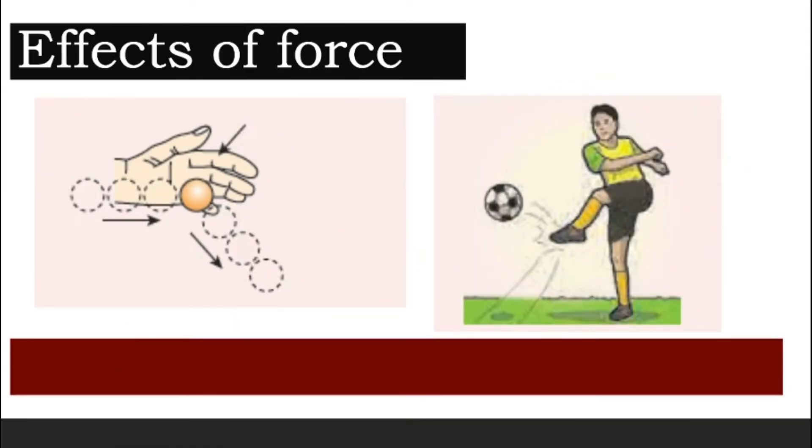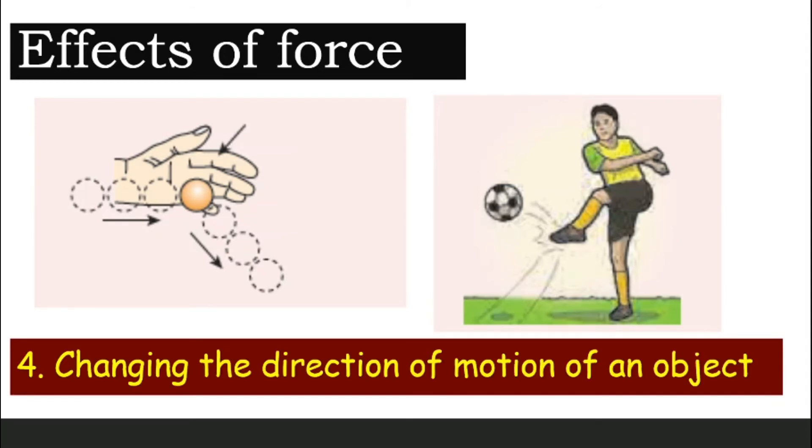How about this one? If the ping pong ball is moving towards the right and you give it a push towards a downward position, or the soccer ball here, the ball is flying towards you and you give it a kick, which is a push. What will happen? The direction of the motion will change. The ping pong ball and the soccer ball will change its direction. So, here you go, another effect of force that it will change the direction of motion of an object.